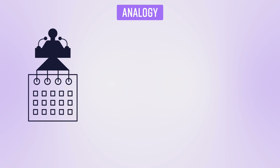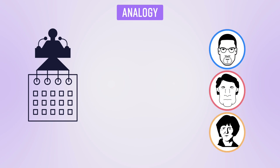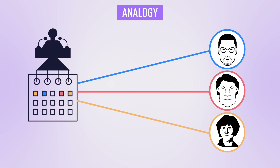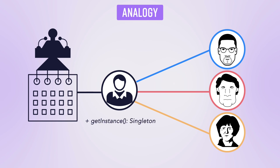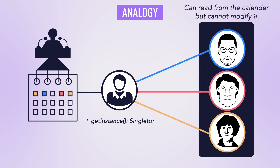A good analogy for a singleton is a prime minister's calendar. The whole country has just one prime minister and that prime minister has just one calendar. Everybody wants access to schedule a slot for their meetings. If you give new instances of this calendar to everybody with direct access, they would be able to override it. Instead, the personal assistant has access to the calendar and everybody communicates through the PA — like the getter function. You can request a slot via the PA but cannot modify the calendar directly. It is a global resource shared by different people but cannot be modified directly.